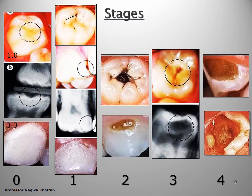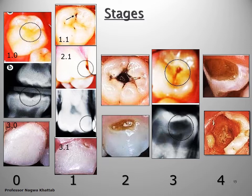In this classification, the concept uses two numbers: the first for the site and the second for the stage. For example, 1-0 means site one, pits and fissures, with stage zero — no cavitation. Site three, stage zero is also no cavitation. Similarly: site one stage one, site two stage one, site three stage one are all stage one lesions at their respective sites.